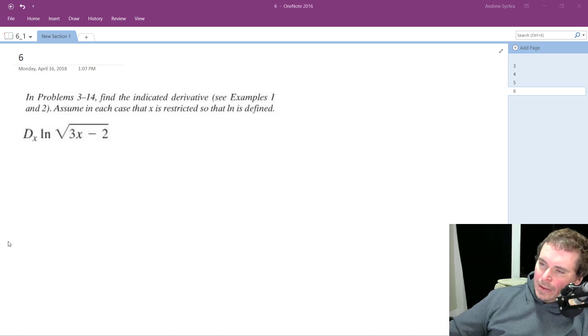So we want to take the derivative of this. I'm going to rewrite this as natural log of 3x minus 2 raised to the 1 half.